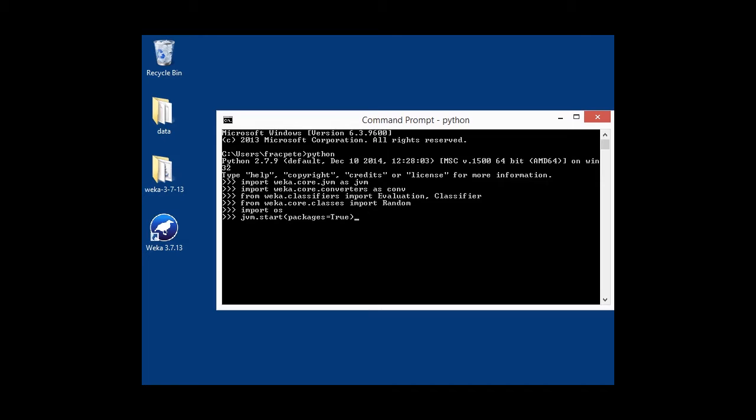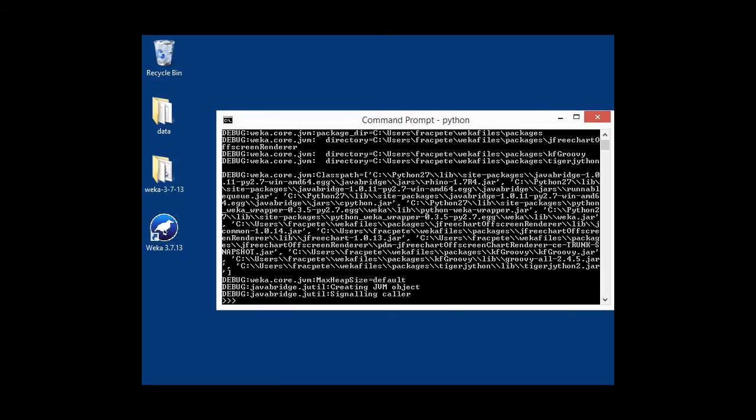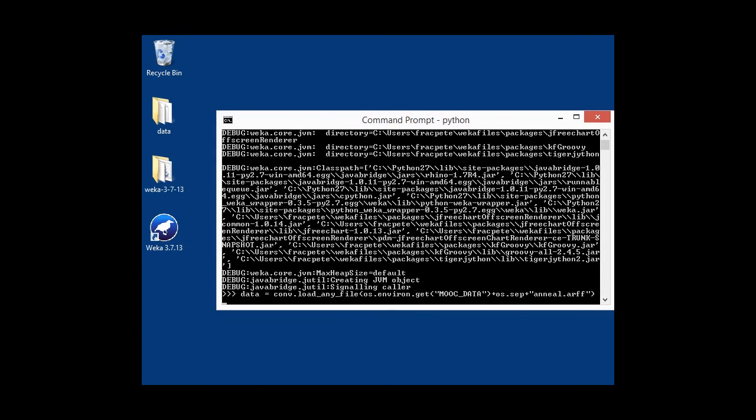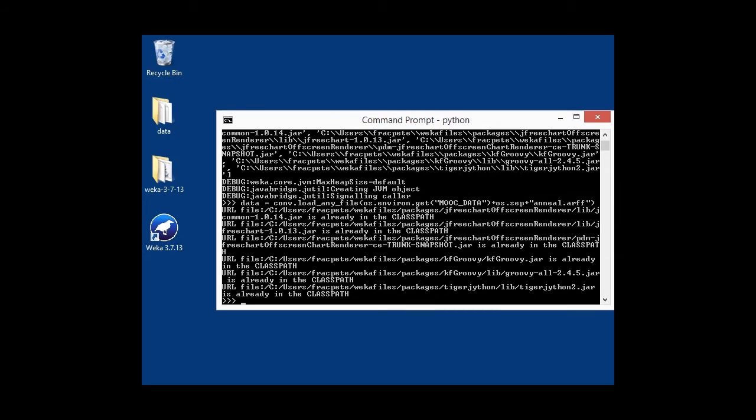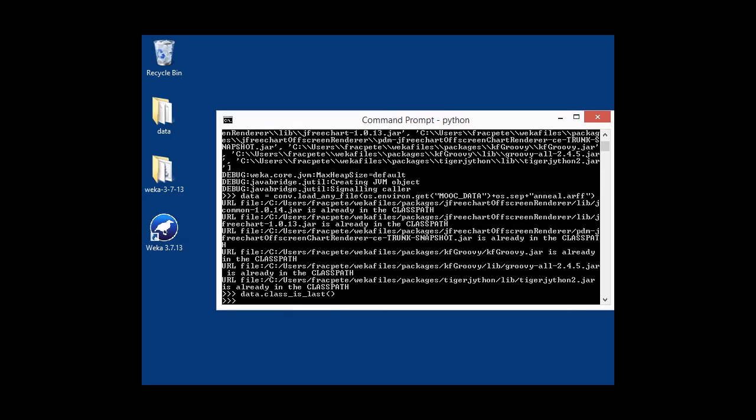So we're going to import the converters and we're importing evaluation and classifier. First of all, we're going to start the JVM. In this case, using the packages as well, it's not strictly necessary, but we'll just do it. You can see a lot of output here. It basically tells you what the libraries are in the class path, which is all good. Next thing is we're going to load some data. In this case, our annealed dataset. Once again, using the same approach that we've already done with Jython using the environment variable, that's loaded. Then we're going to set the class, which is the last one, and we're going to configure our J48 classifier.